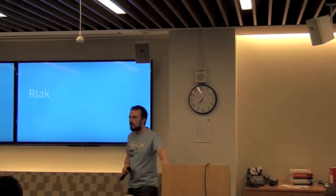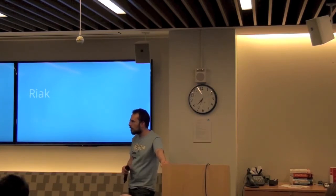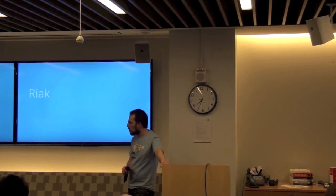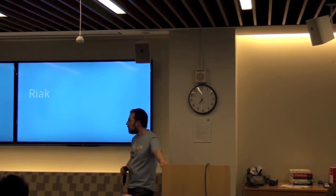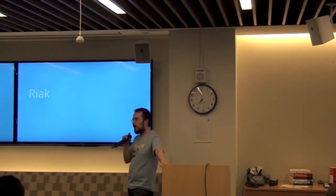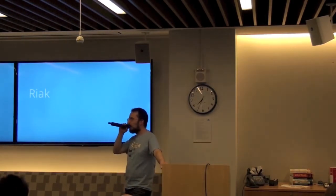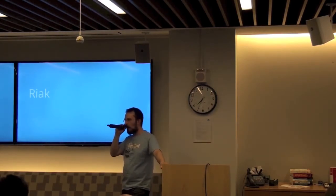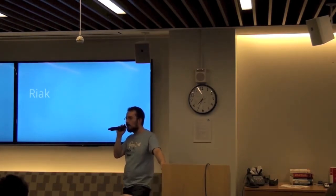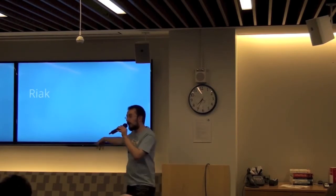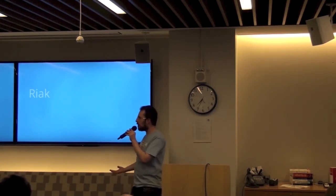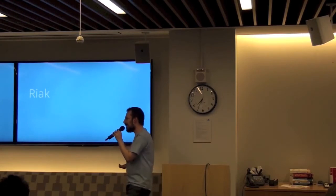Discussion about Cassandra's thrift protocol and multi-get: a single API call with a large argument can trigger 10,000 internal requests, causing unexpected load. In Riak there is no concept of multi-get, so you don't have to worry about a single API fault exploding into thousands of backend requests. On the other hand, that also means you can't batch fetch multiple keys in one call.